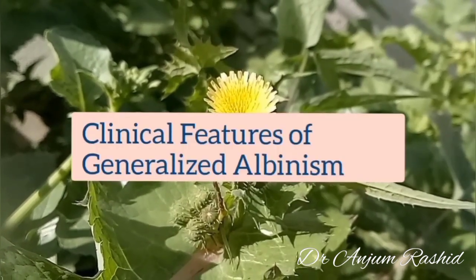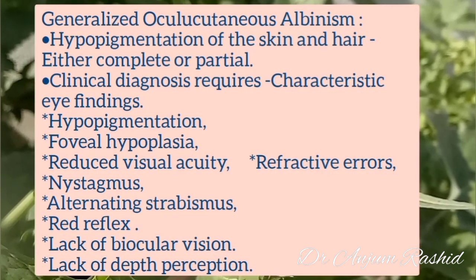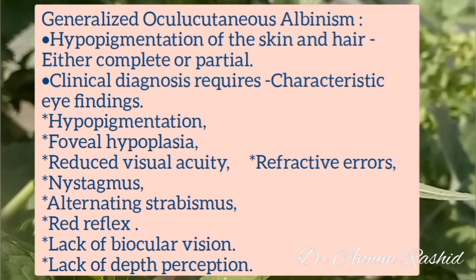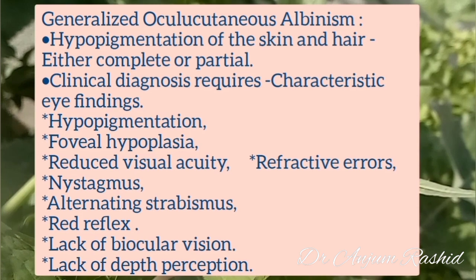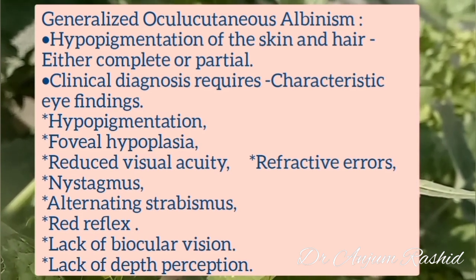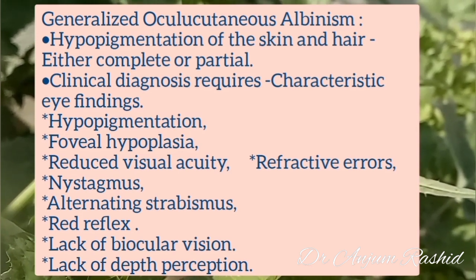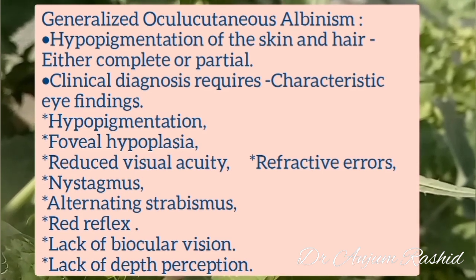Now the clinical features of generalized albinism. In generalized oculocutaneous albinism there is hypopigmentation of the skin and hair, which may be either complete or partial. Clinical diagnosis requires characteristic eye findings, including hypopigmentation, foveal hypoplasia, reduced visual acuity, refractive errors, nystagmus, alternating strabismus, red reflex, lack of binocular vision, and lack of depth perception.